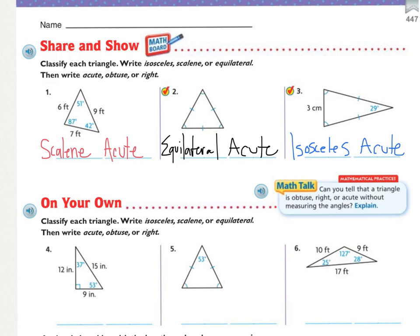For the math talk, we've already gone through that. You can just look at an angle and tell whether it's obtuse, right, or acute. Thanks — we've learned now.